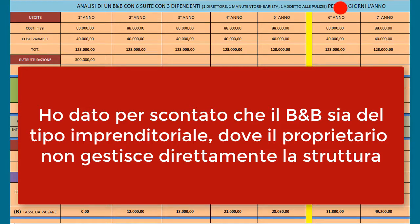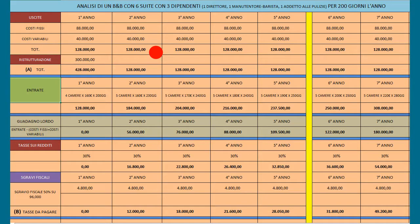Per 200 giorni all'anno: come puoi vedere non ho messo 365 giorni, perché quando si fa un business plan di questo tipo non dobbiamo ragionare per eccesso ma per difetto. Se le cose andranno bene, tanto di guadagnato. Poi c'è una prima parte dedicata alle uscite, con costi fissi e costi variabili.